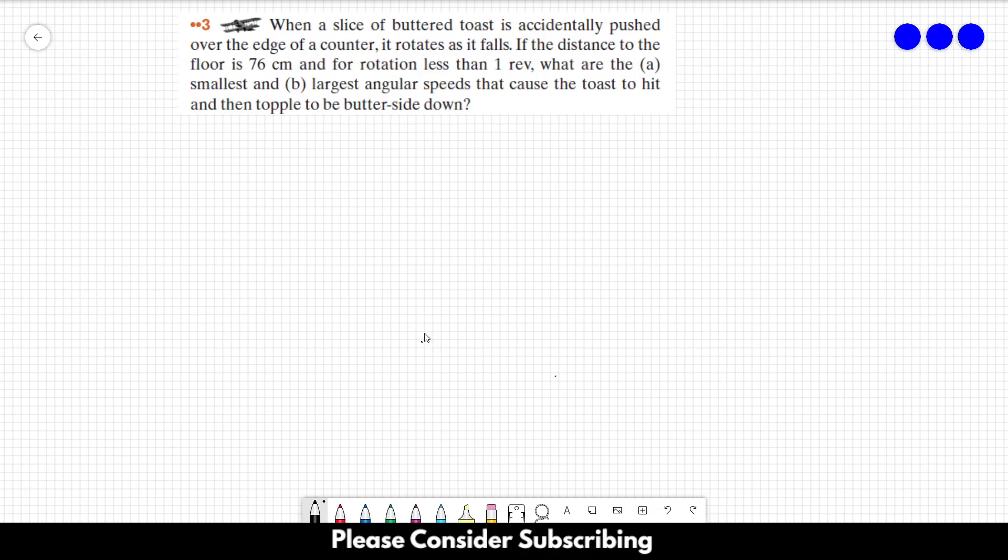Number three: When a slice of buttered toast is accidentally pushed over the edge of a counter, it rotates as it falls. If the distance to the floor is 76 centimeters and for rotation less than one revolution, what are the (a) smallest and (b) largest angular speeds that cause the toast to hit and then topple to be butter side down?